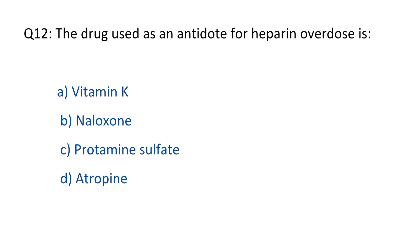Question No. 12. The drug used as an antidote for heparin overdose is? The right option is option C, protamine sulfate.